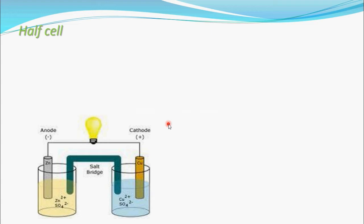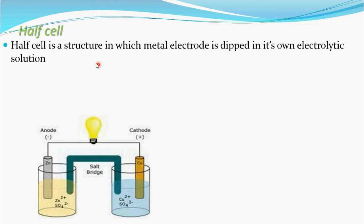Let's see what a half cell is. This is the whole cell, and half of this is a half cell. A half cell is a structure in which a metal electrode is dipped in its own electrolytic solution.